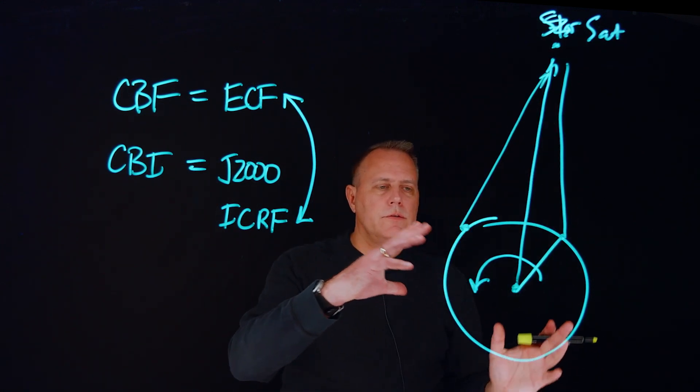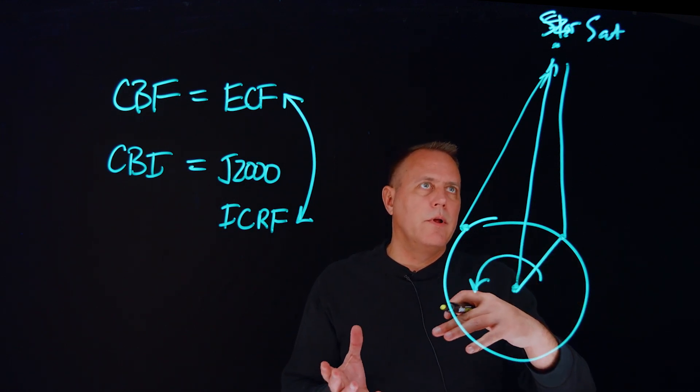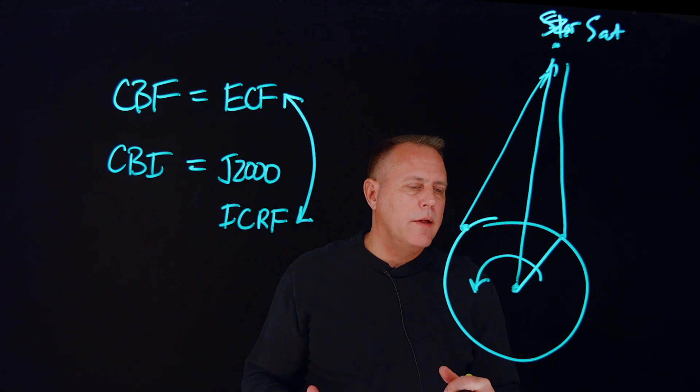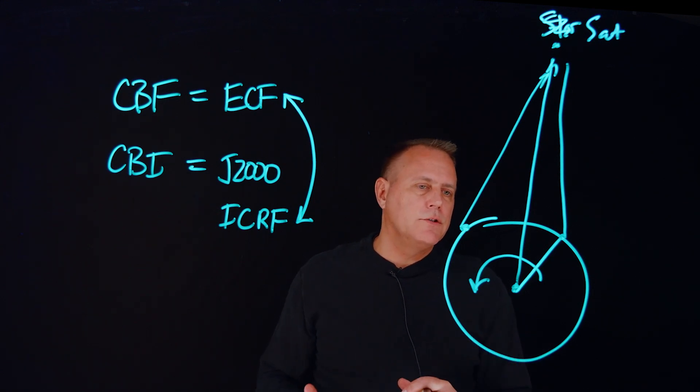And so the earth centered fixed frame is rotating relative to inertial space. And I need to understand how that's changing as a function of time.